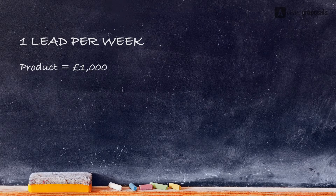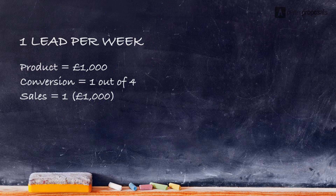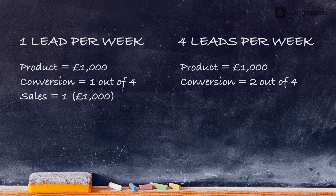You ask them what their average sale is and work out their margin. If they're selling a £1,000 product and converting one in four, they're making one sale a month from their website traffic. If you can get them four leads a week and also improve their conversion rate by half, they're going to go from one sale a month to roughly eight a month.